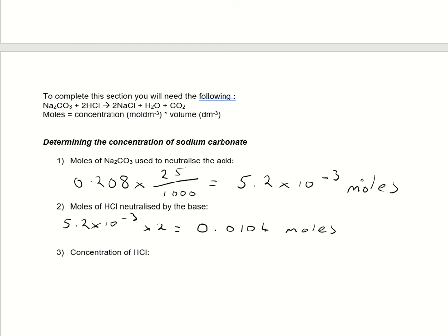Now, the concentration of the HCl. I need to rearrange this equation. So instead of N equals CV, I need to make concentration the subject. I would divide both sides by volume. It's moles over volume in this case.